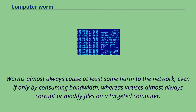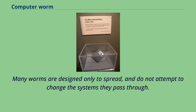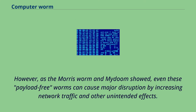Worms almost always cause at least some harm to the network, even if only by consuming bandwidth, whereas viruses almost always corrupt or modify files on a targeted computer. Many worms are designed only to spread and do not attempt to change the systems they pass through. However, as the Morris worm and Mydoom showed, even these payload-free worms can cause major disruption by increasing network traffic and other unintended effects.